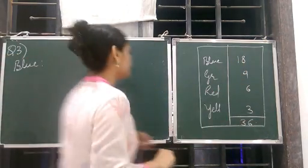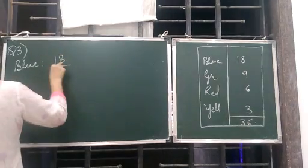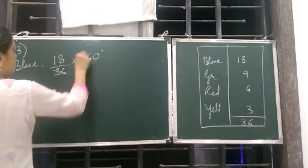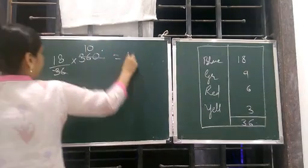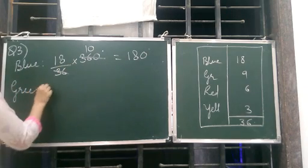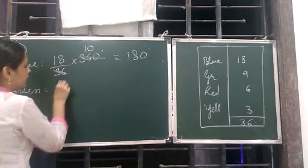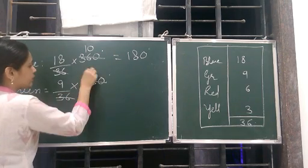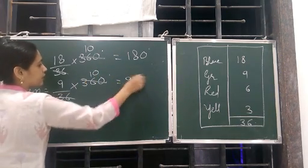Fractions should be what? 18 upon 36 into 360 degree. Yes. This becomes 10 and this becomes 180 degree. Then green will be 9 upon 36 into 360 degree. Again this becomes 10 and this becomes 90 degree.